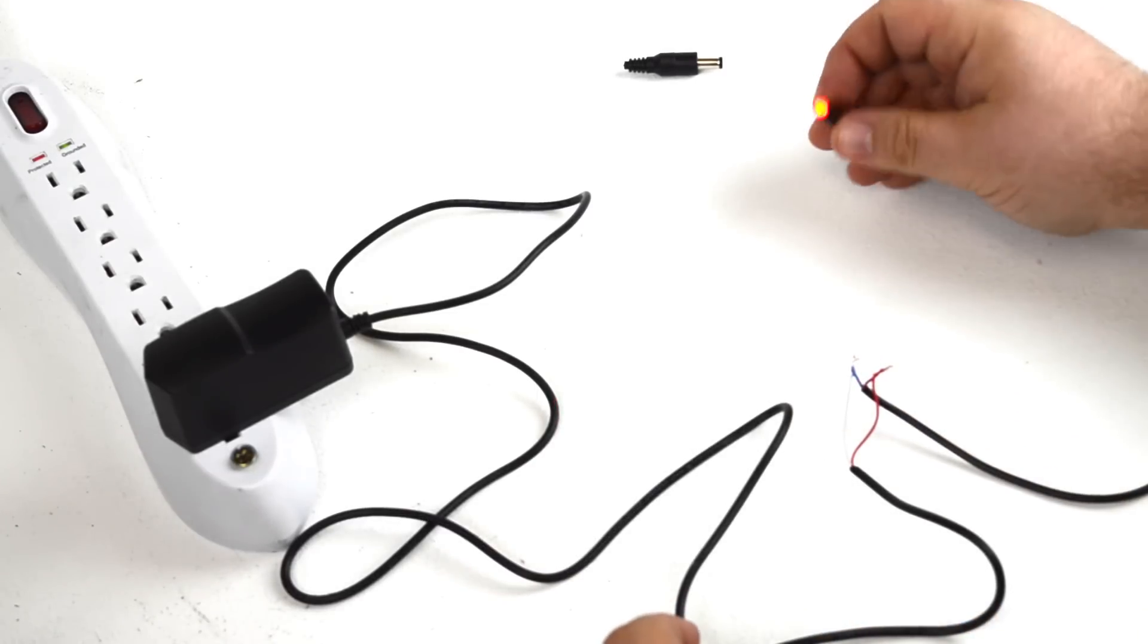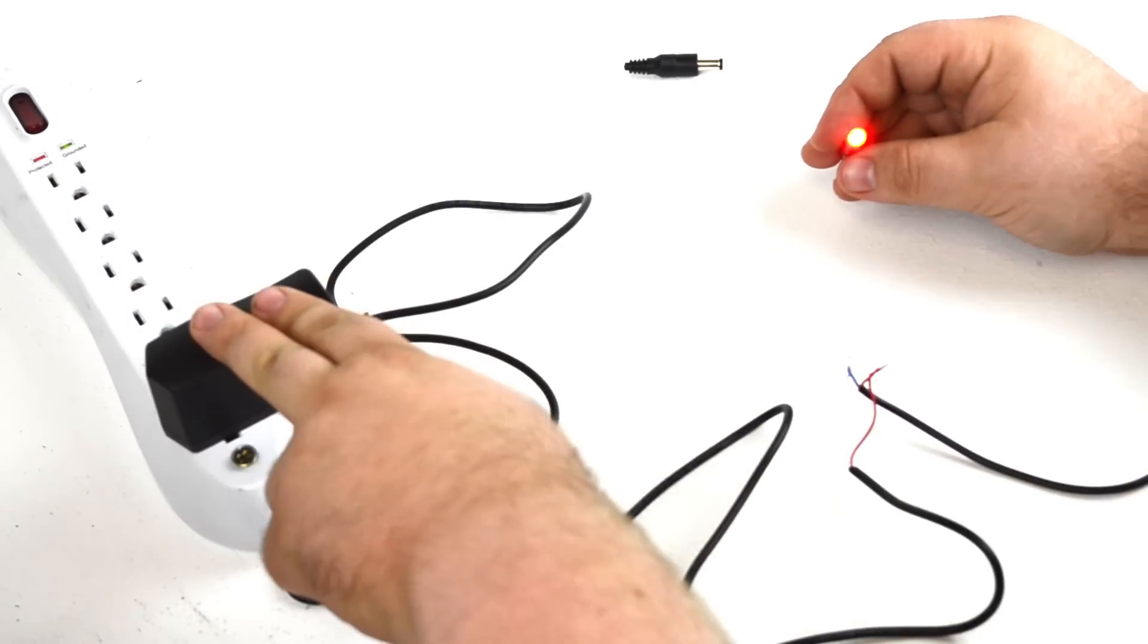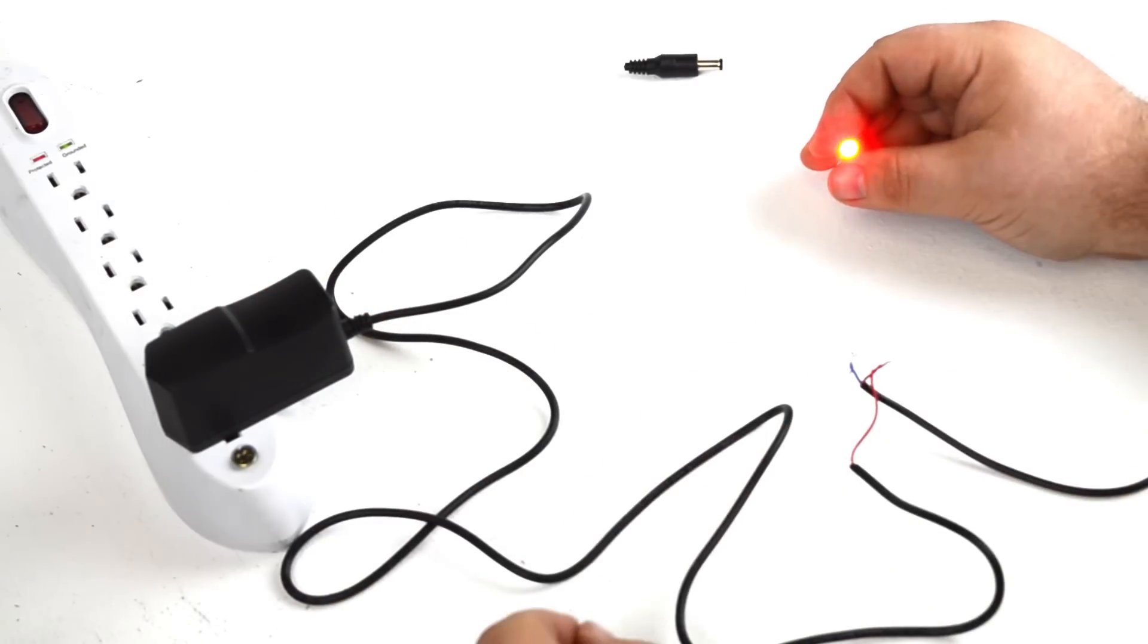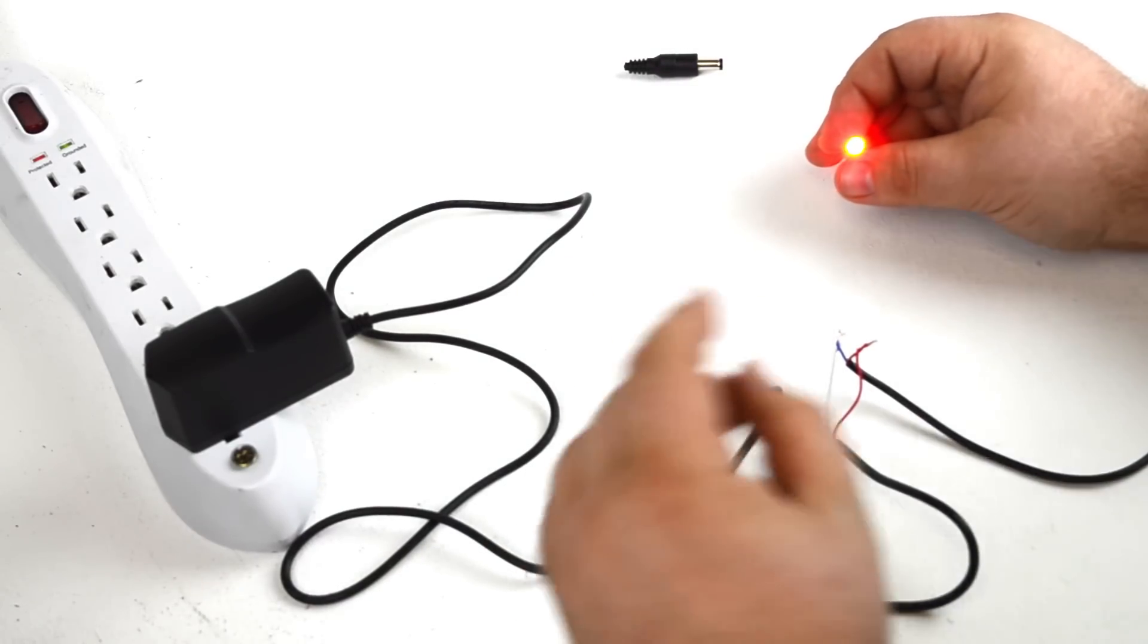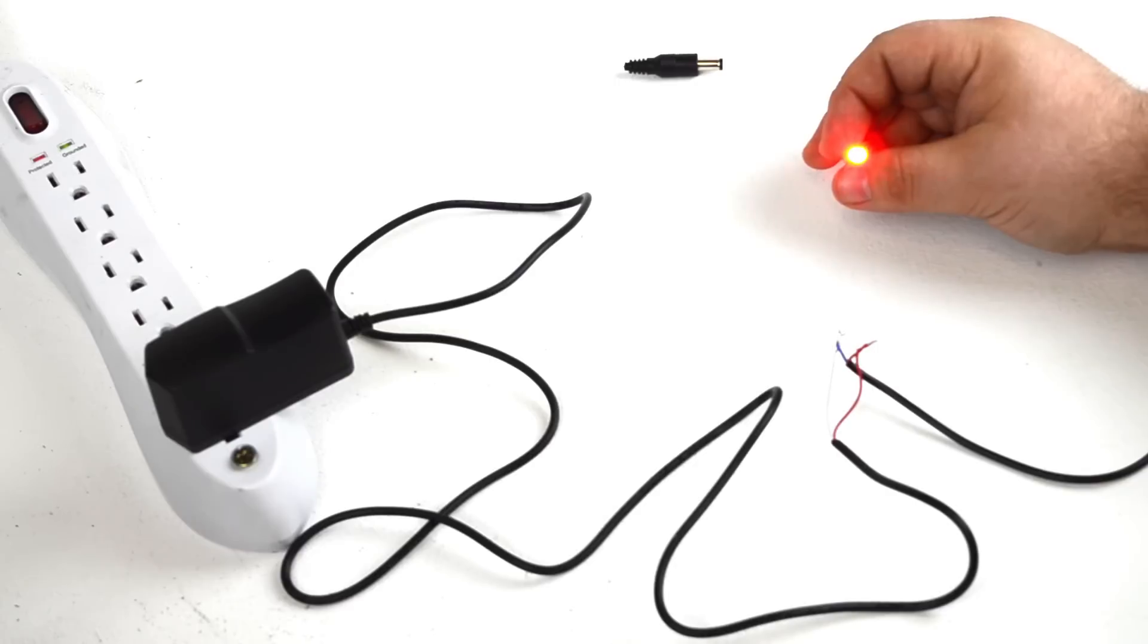So those are a couple quick tips to get you going if you have a 12 volt device and a power supply and you need to either test it quickly or get it up and running for the night and you don't have access to some of these adapters. Hopefully you found that helpful. If you have any questions go ahead and leave a comment under this video or send us an email at sales at fryprops.com. Thanks. Bye.